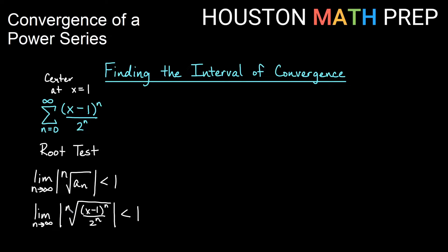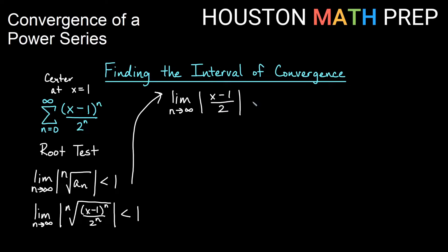When we simplify, the nth root takes off the nth powers. So we get the limit as n approaches infinity of the absolute value of (x minus 1) over 2, less than 1. Notice there's no n left after simplification, so we don't really need the limit. We just have the absolute value of (x minus 1) over 2 less than 1.